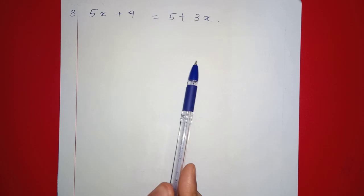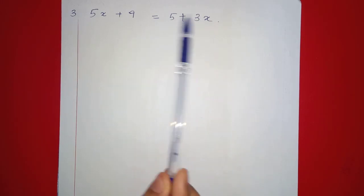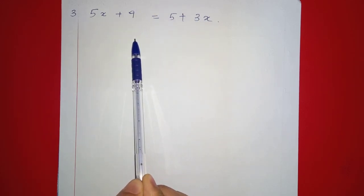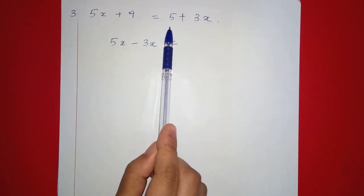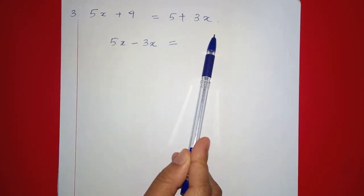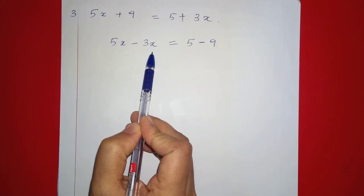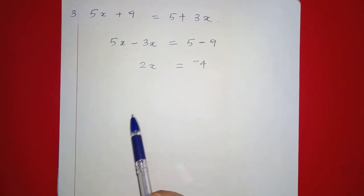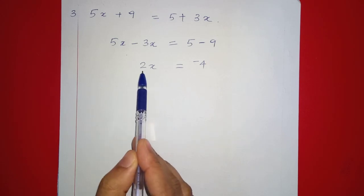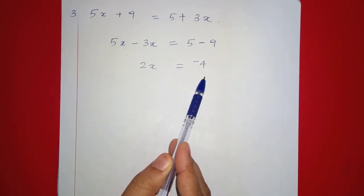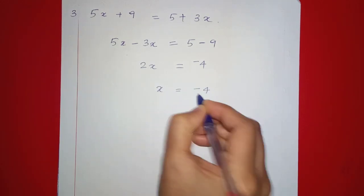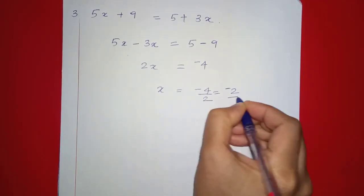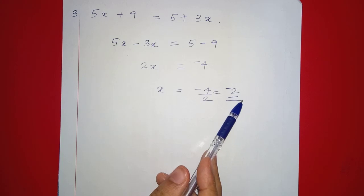Next: 5x plus 9 is equal to 5 plus 3x. We get x terms on one side: 5x minus 3x equals 5 minus 9. So 2x equals minus 4, which implies x equals minus 4 divided by 2, so x equals minus 2.